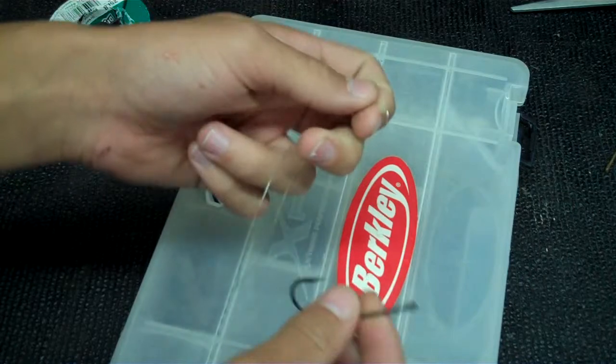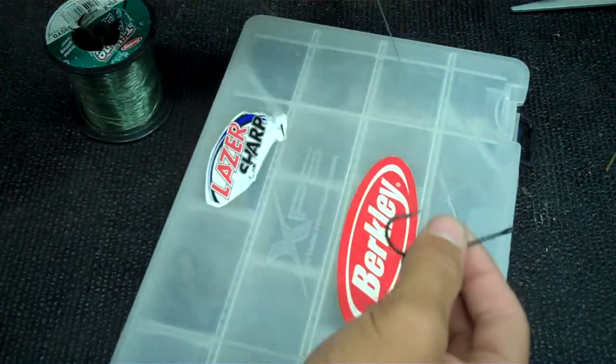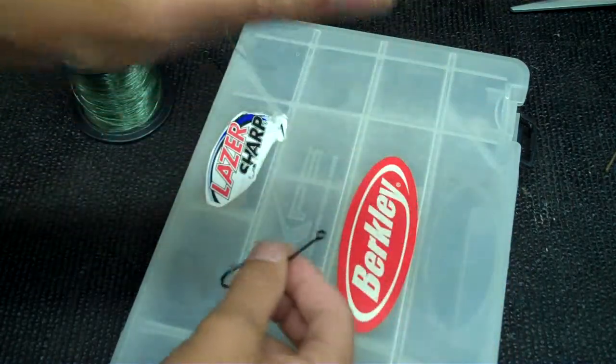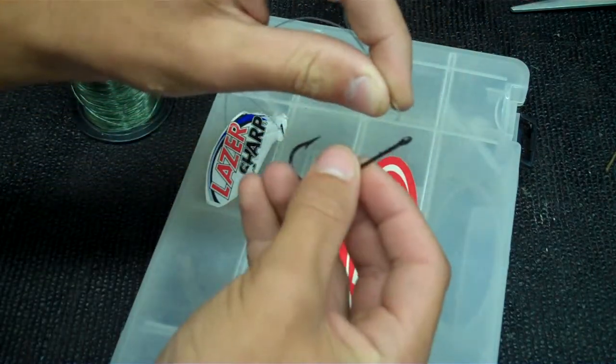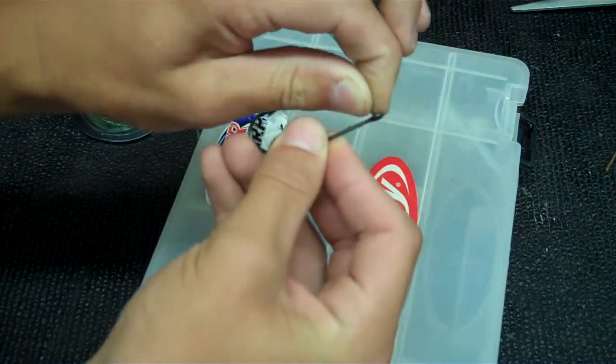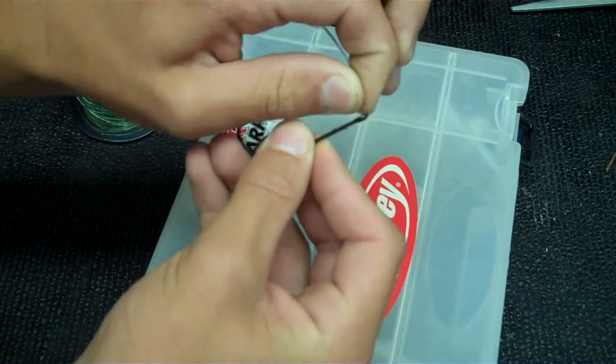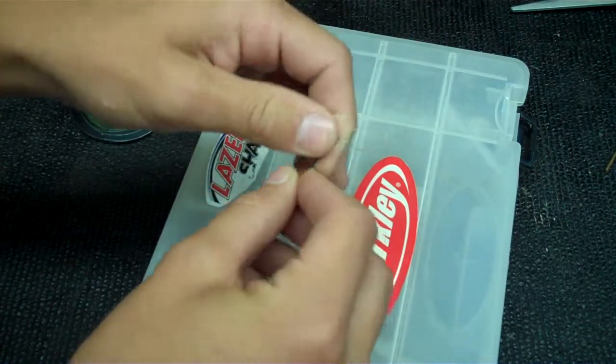Basically, the first thing you want to do is form a loop on the end like this. Then you feed it through the eye of the hook like so.